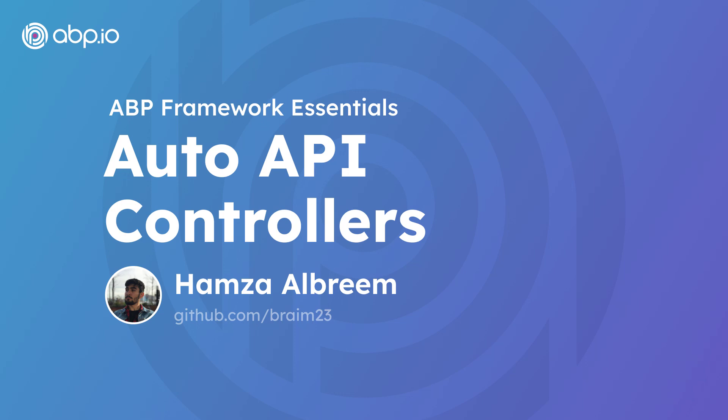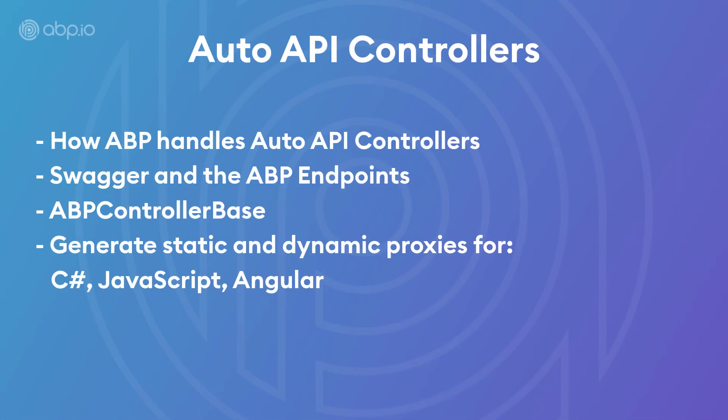Hey there! In this video, we'll talk about the Auto API controllers from the ABP framework. We'll check out how ABP handles the Auto API controllers. We'll also talk about Swagger and the ABP endpoints. We're going to build up the controller base, and last but not least, we're going to generate static and dynamic proxies for C#, JavaScript, and Angular.